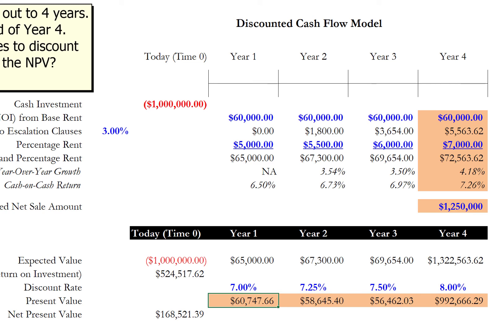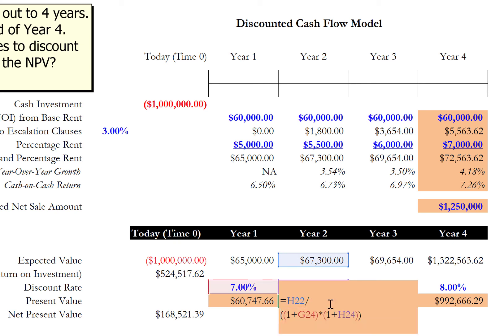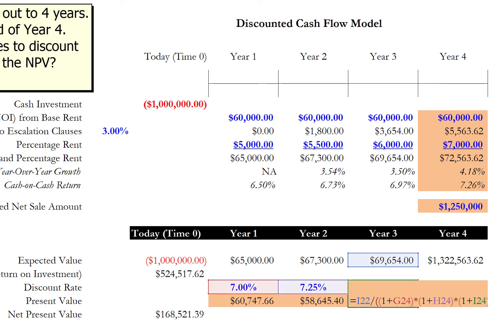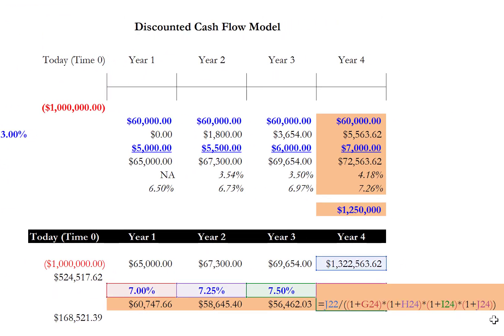Let's take a look at how the present value is correctly calculated for each of these years. For year one, it's quite simple: take the annual amount and divide by one plus that year's discount rate. For year two, we need to take the product of the two discount rates as the denominator — so we take one plus the 7% for the year one period and multiply that by one plus the 7.25% for the current year. And by extension, for year three, we take one plus 7% for the first year, times one plus 7.25% for the second year, times one plus 7.5% for the current year. This pattern extends for however many periods you have.